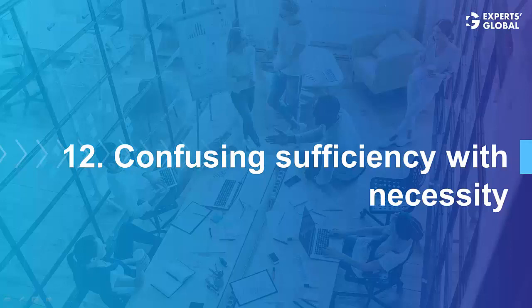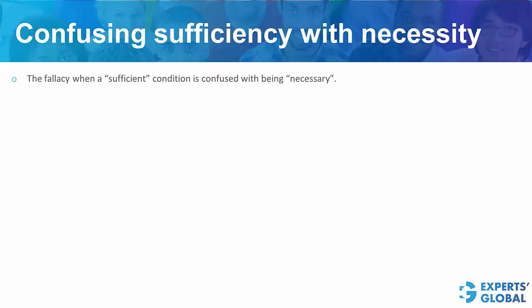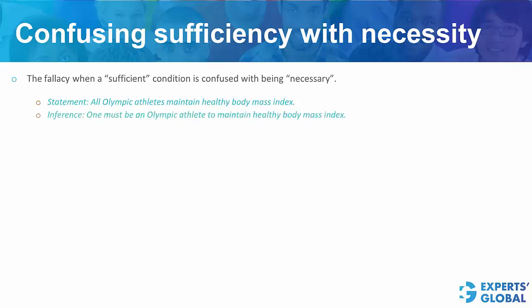Next fallacy: confusing sufficiency with necessity. This happens when a sufficient condition is confused with being a necessary condition. Look at this statement: 'All Olympic athletes maintain healthy body mass index.' Being an Olympic athlete is sufficient for concluding that the person maintains a healthy body mass index, but it is not necessary. Drawing such an inference would be committing the error of confusing sufficiency with necessity.